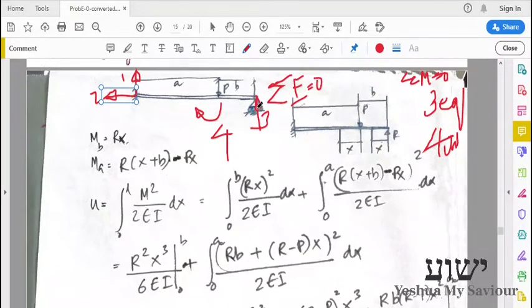To find the support reaction here is a bit difficult, so we will make use of Maxwell's reciprocal theorem or Castigliano's first theorem to solve this. First, we draw a free body diagram, remove this support and replace it with a reaction R.